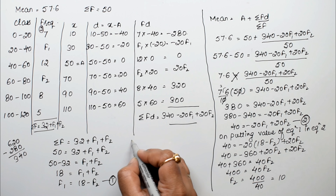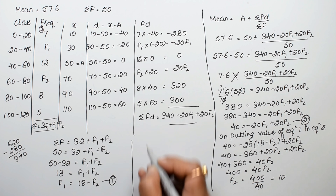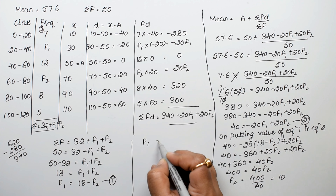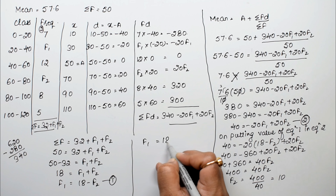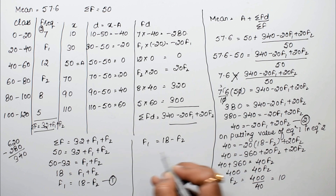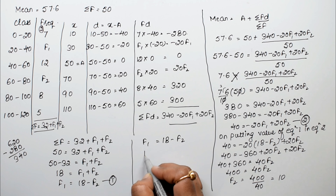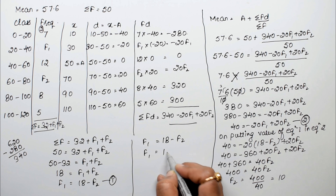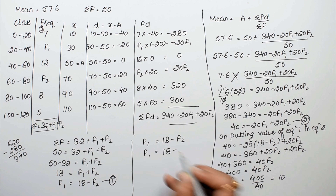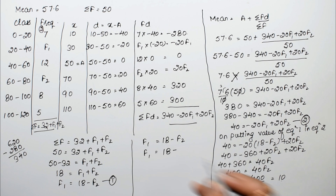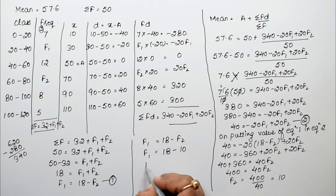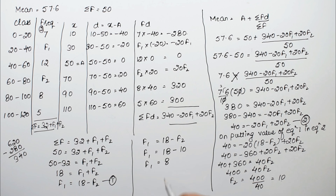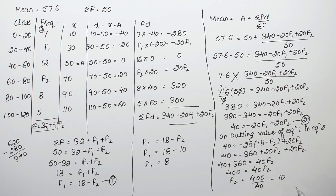Now substituting back: f1 equals 18 minus f2 equals 18 minus 10 equals 8. So f1 equals 8 and f2 equals 10 is the answer.